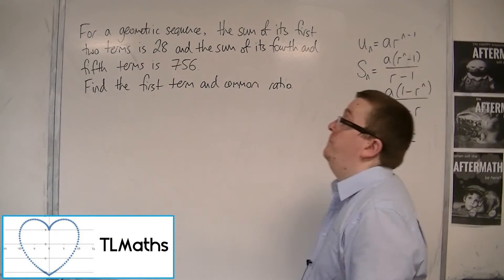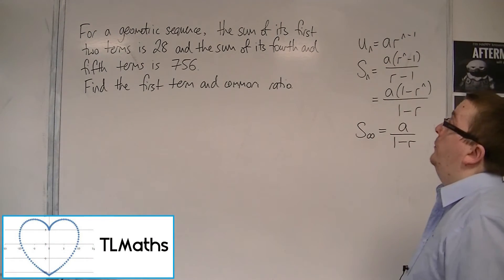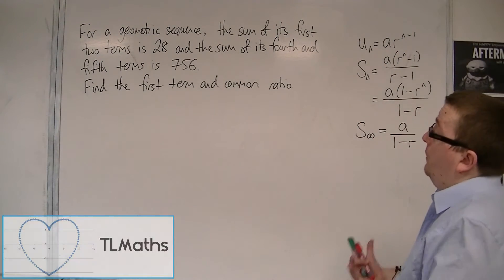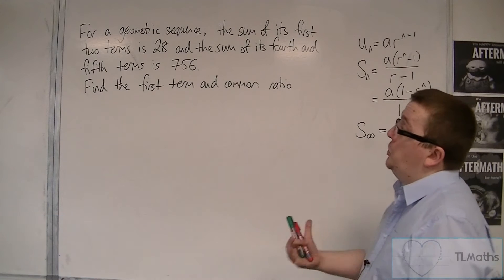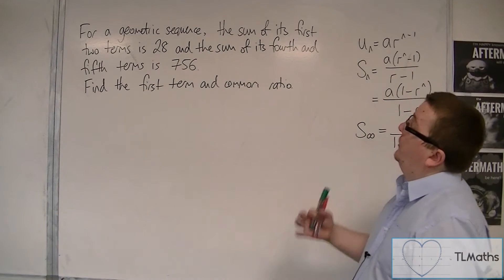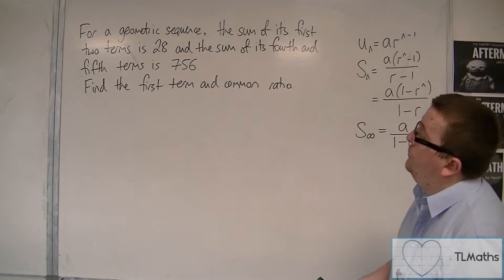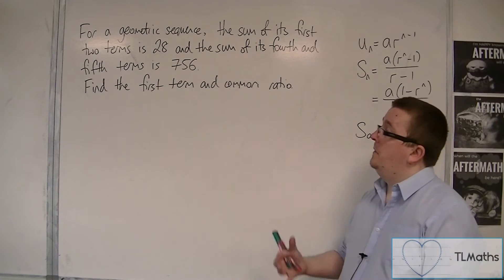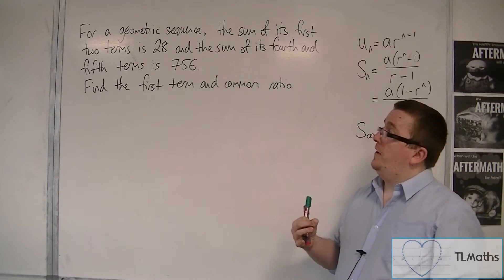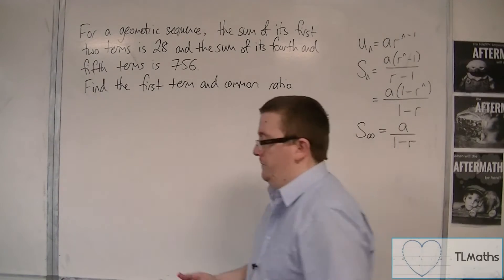In this problem, we have a geometric sequence where the sum of its first two terms is 28, and the sum of its fourth and fifth terms is 756. Find the first term and the common ratio.